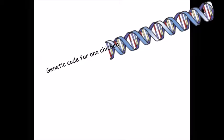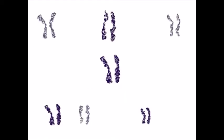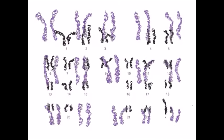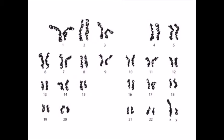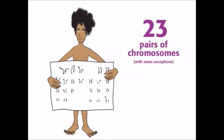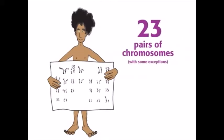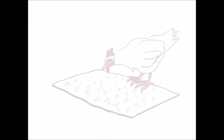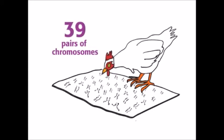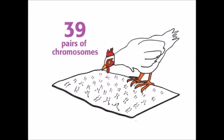The DNA inside the cell is organised into chromosomes, and in fact into pairs of chromosomes, because we inherit one of each pair from our parents. Humans have 46 chromosomes, that's 23 pairs. But chickens have 78 chromosomes, that's 39 pairs.